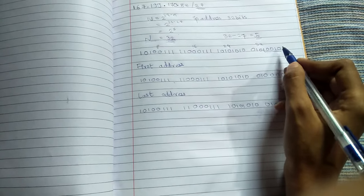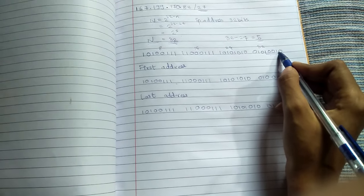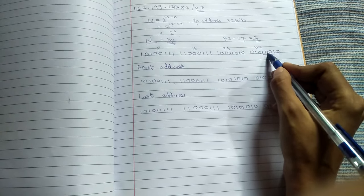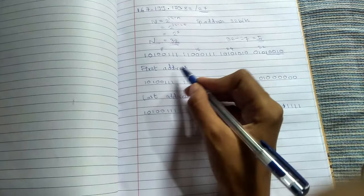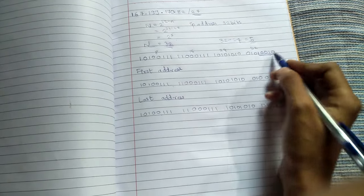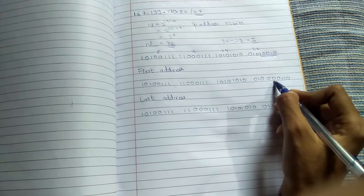You will count the last five bits: one, two, three, four, and five. Now to find the first address, you have to convert this last five bits into zero. Here I have converted it to show you.